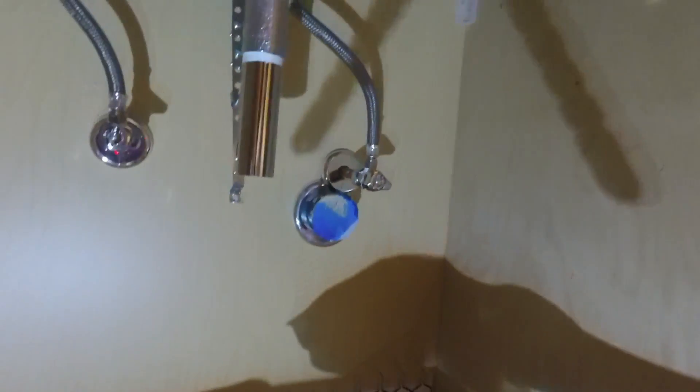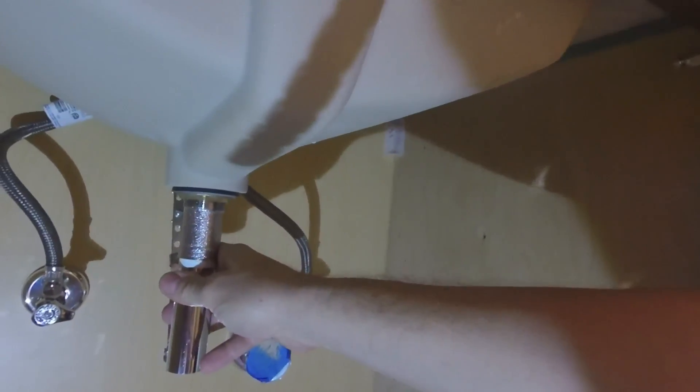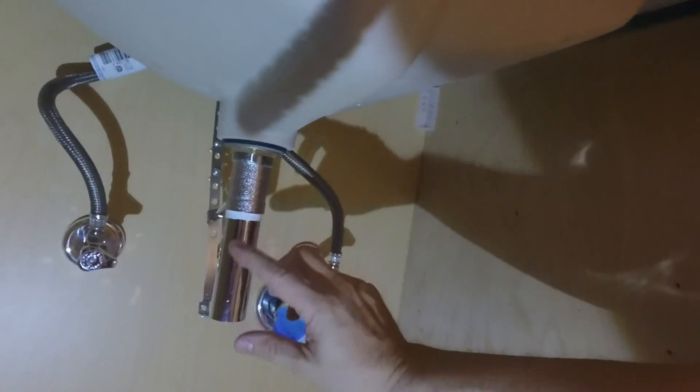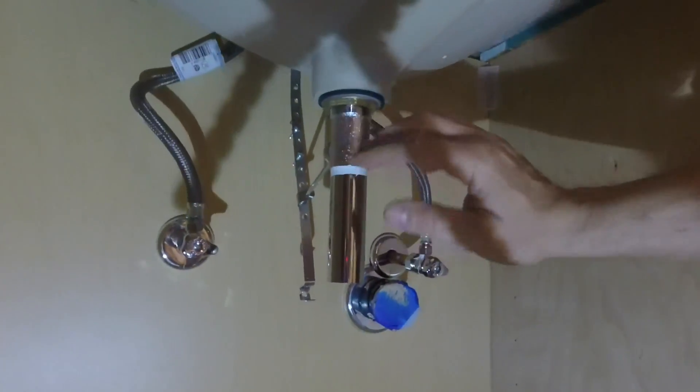You're going to need a P-trap and you may need an extension tube. Now when you have your faucet in, it may come with a tailpiece, and that's what this piece is underneath the sink.